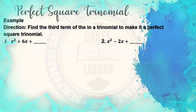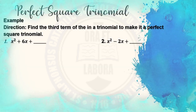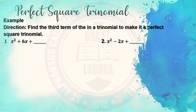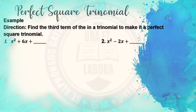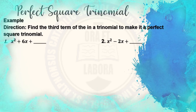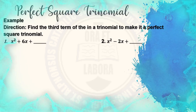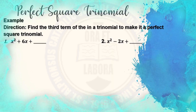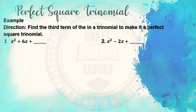In this method, we will also find a third term in a quadratic trinomial that can make the trinomial a perfect square trinomial. Direction: find the third term of the trinomial to make it a perfect square trinomial. Number 1: x squared plus 6x plus blank.